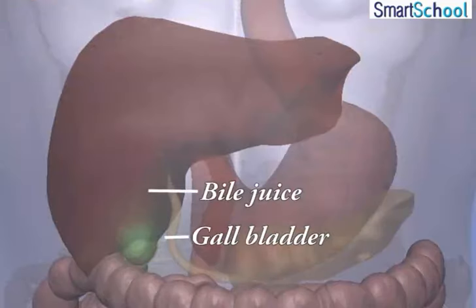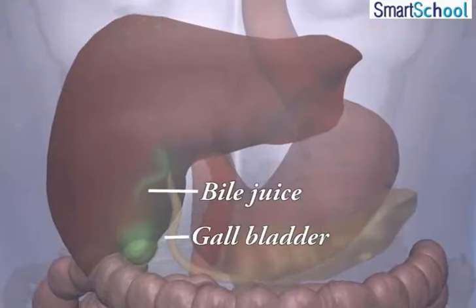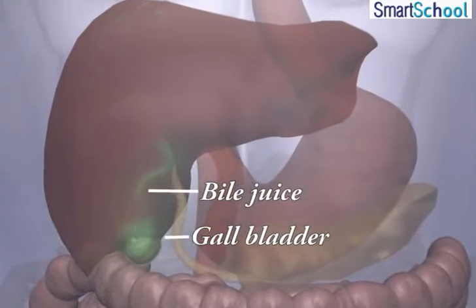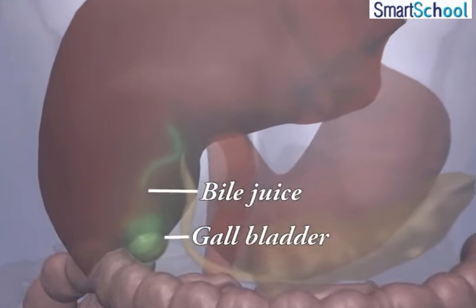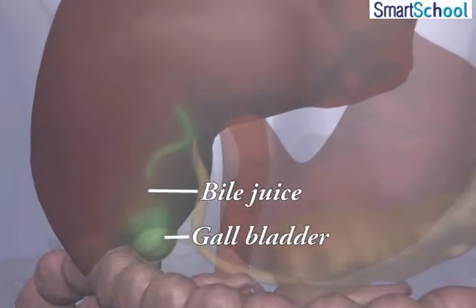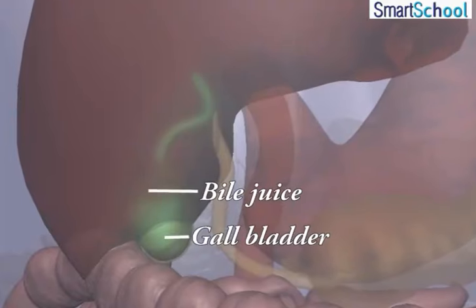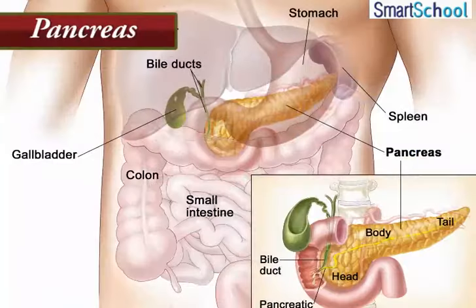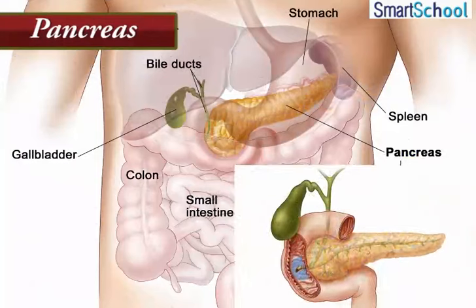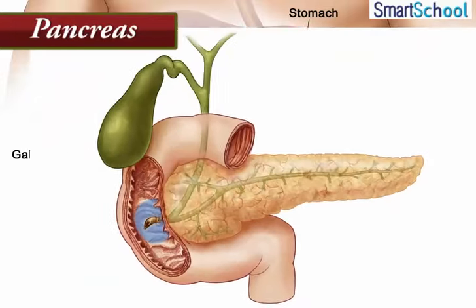The liver secretes bile juice, which is temporarily stored in a sac called the gallbladder. The bile juice plays an important role in the digestion of fats. The pancreas is a large cream-colored gland positioned just below the stomach.